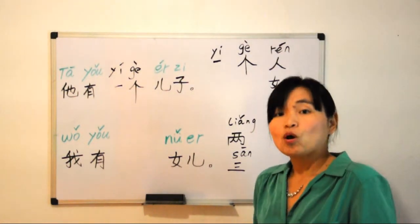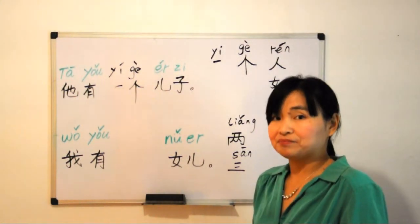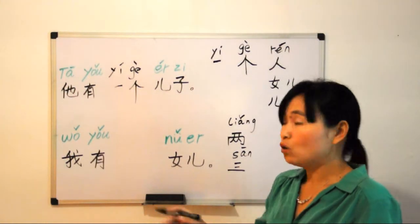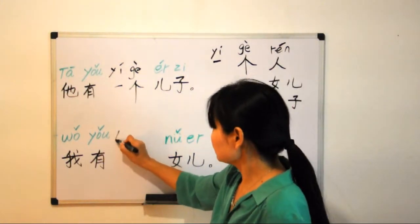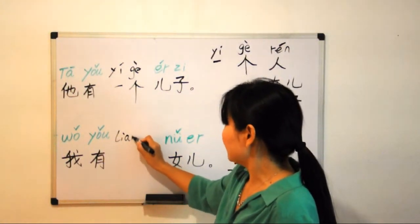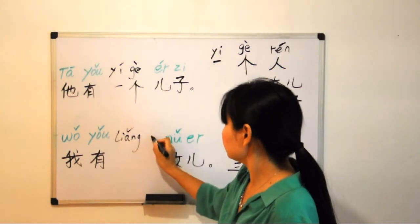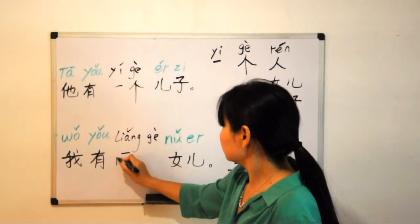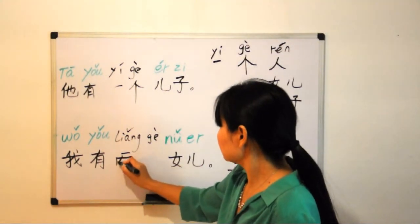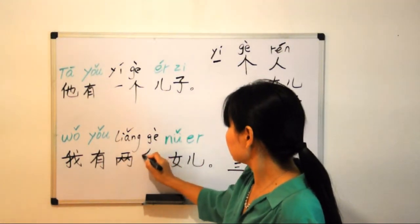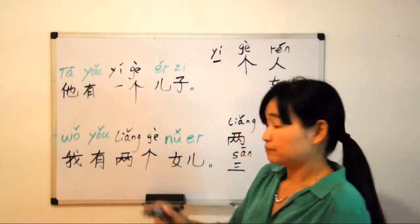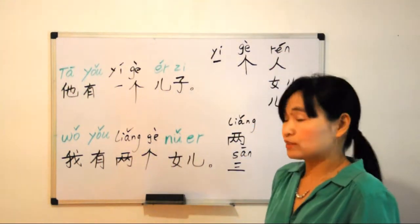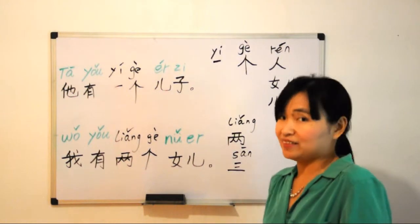How about how to say 'I have two daughters'? I - 我 (wǒ). 我有 (wǒ yǒu) two, 两个, 两个女儿 (liǎng gè nǚ'ér). I have two daughters. 我有两个女儿.